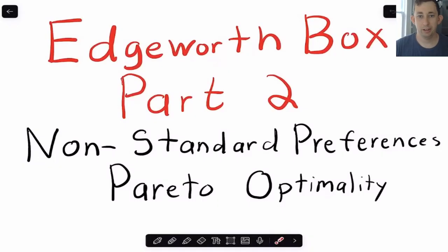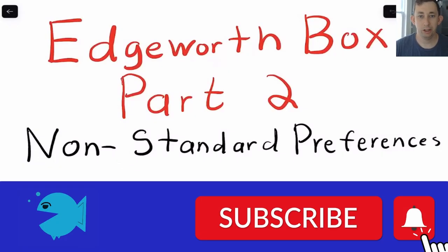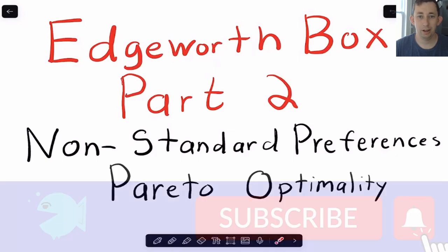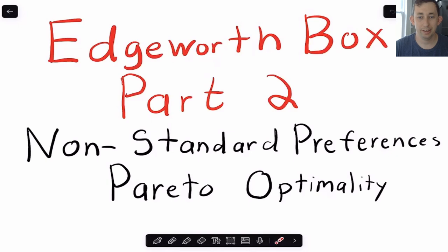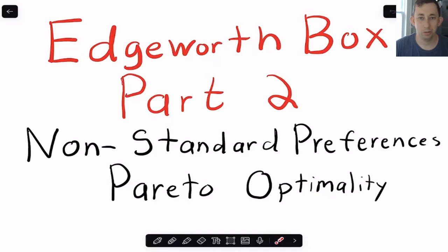Hi guys, welcome back to A Case of Econ Struggles. Welcome to another micro struggle. Today we're returning to the Edgeworth box with Part 2. In the last video on the Edgeworth box, I talked about just how to set up the Edgeworth box as well as how to look for Pareto optimality. Now we're going to do that same thing using non-standard preferences.